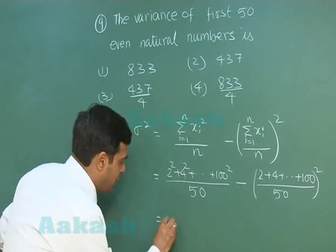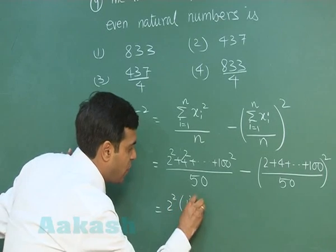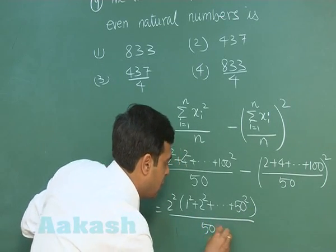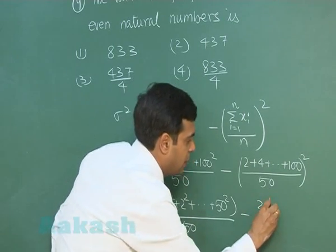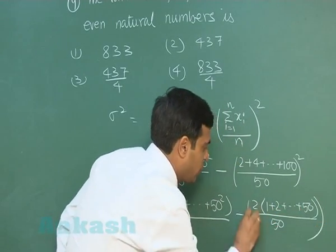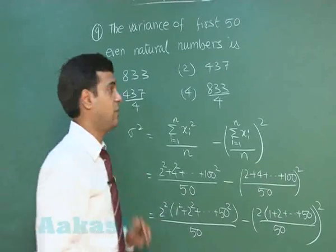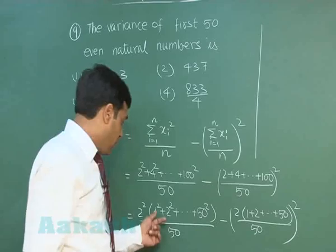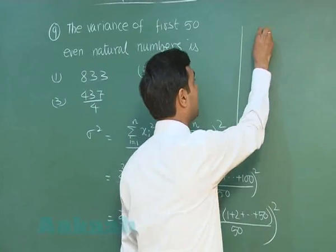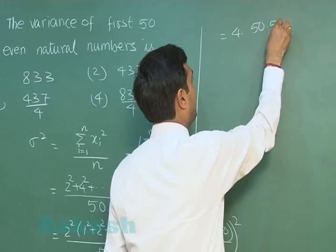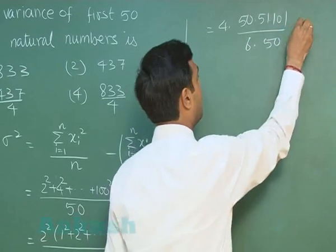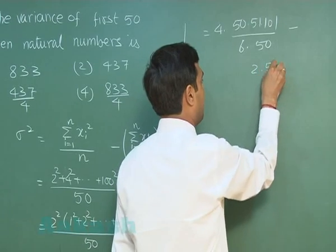Taking 2² common, we are left with (1² + 2² + ... + 50²)/50 minus (2 × (1 + 2 + ... + 50)/50)². The sum of squares of 50 natural numbers is 50×51×101/6, and the sum of first 50 natural numbers is 50×51/2.